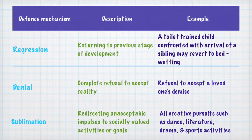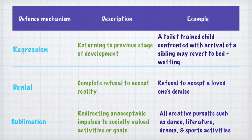Regression is a defense mechanism wherein the person returns to a previous stage of development. A good example is a child who, upon the arrival of a sibling, may revert to bed-wetting. This child, who had already learned toilet training, regresses because the anxiety of sharing parents with a new sibling is so overwhelming that the child goes back to a more primitive stage of development. This is called regression — returning to a previous, lower stage of development.